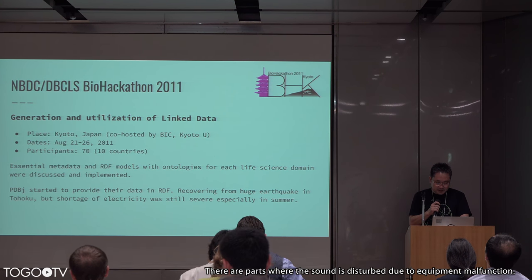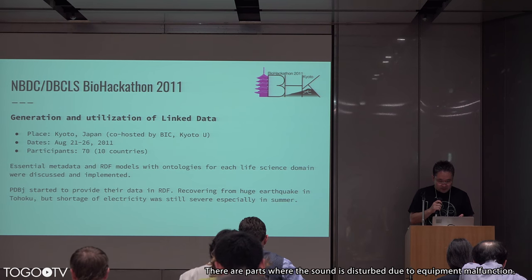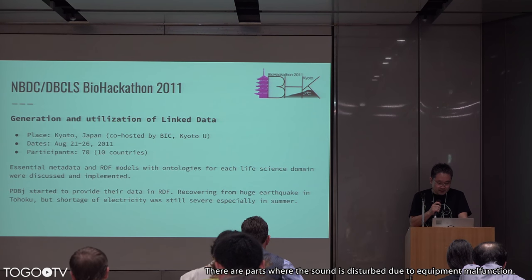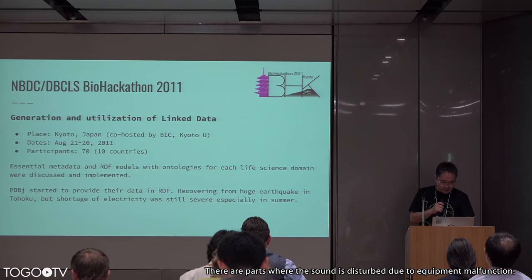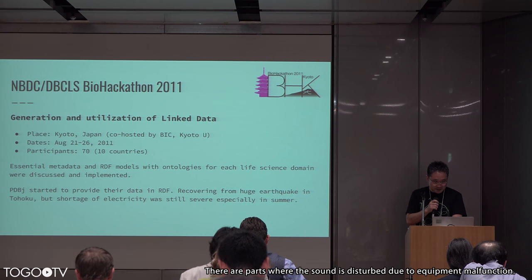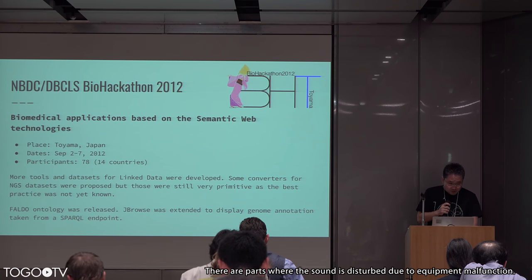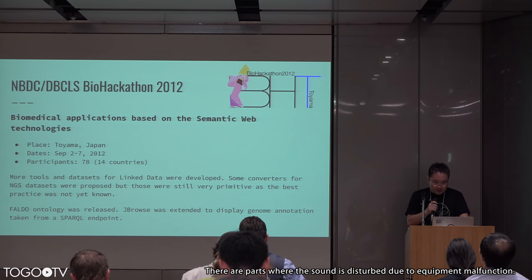At the 2011 Kyoto meeting we discussed essential metadata and RDF models with ontologies for each life science domain, and some were implemented during the hackathon week. That year, PDB started to provide their data in RDF — pioneering work next to UniProt. We were starting to develop RDF for major bioinformatics databases. The next year, we organized a meeting in Toyama, developing more tools and datasets for linked data, including converters for genomics datasets like GFF to VCF.